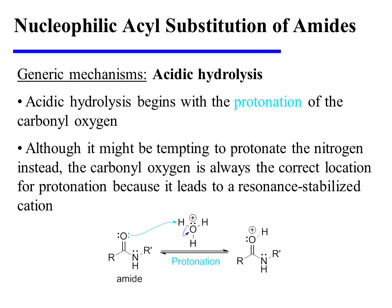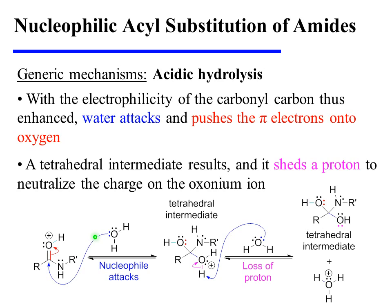The acidic hydrolysis of an amide begins with a familiar protonation of the carbonyl oxygen. Although it may be tempting to protonate the nitrogen instead, the carbonyl oxygen is always the correct location for protonation, because it leads to a resonance-stabilized cation. With the electrophilicity of the carbonyl carbon thus enhanced, water attacks and pushes the pi-bonding electrons onto the adjacent oxygen atom. A tetrahedral intermediate results, and it sheds a proton so as to neutralize the charge on the oxonium ion. Therefore, the next intermediate is a neutral tetrahedral intermediate.